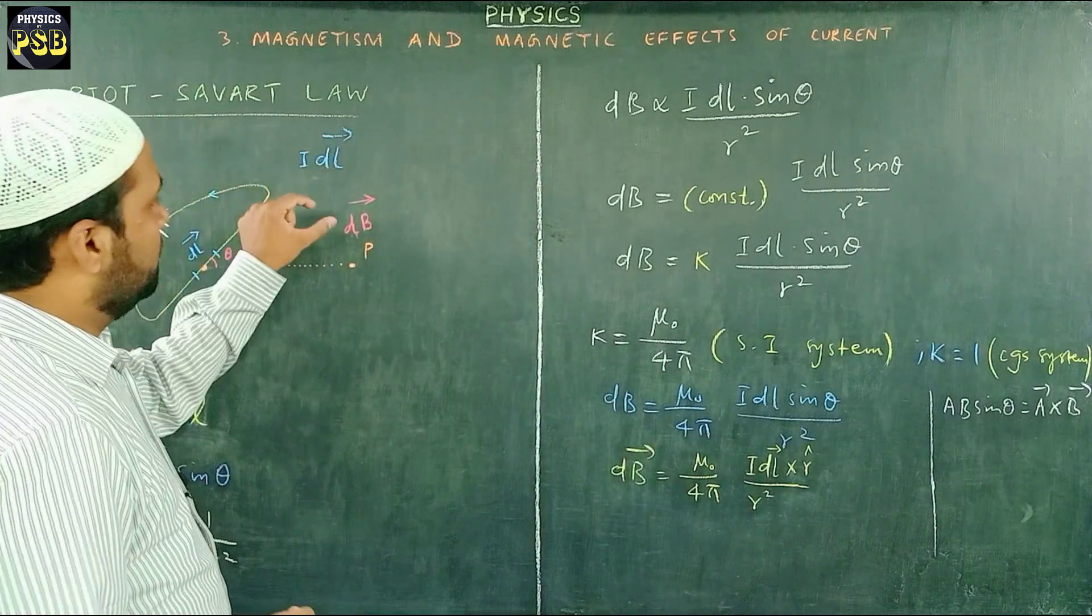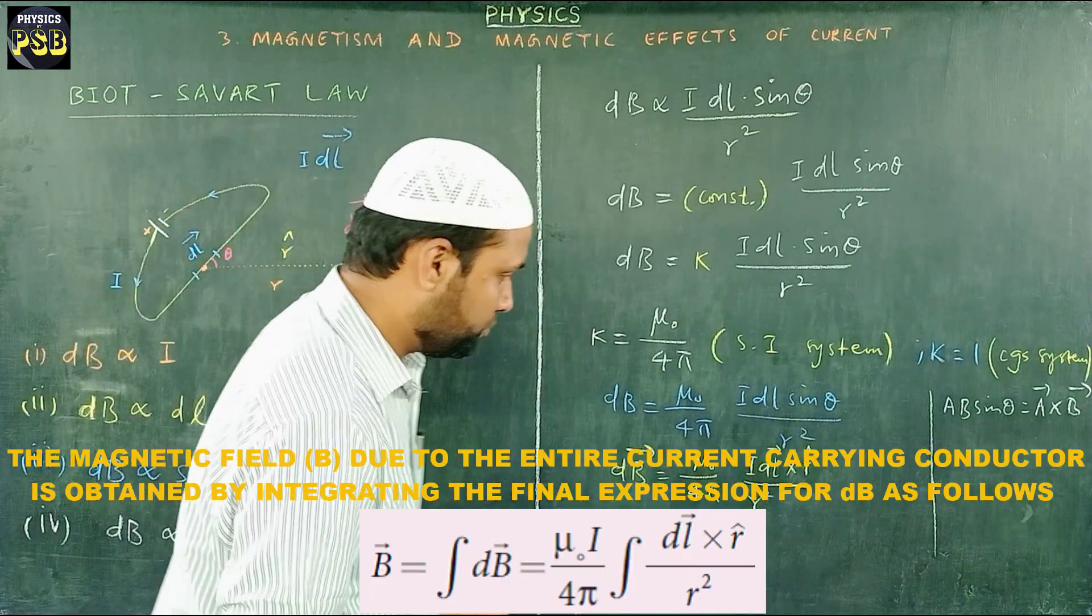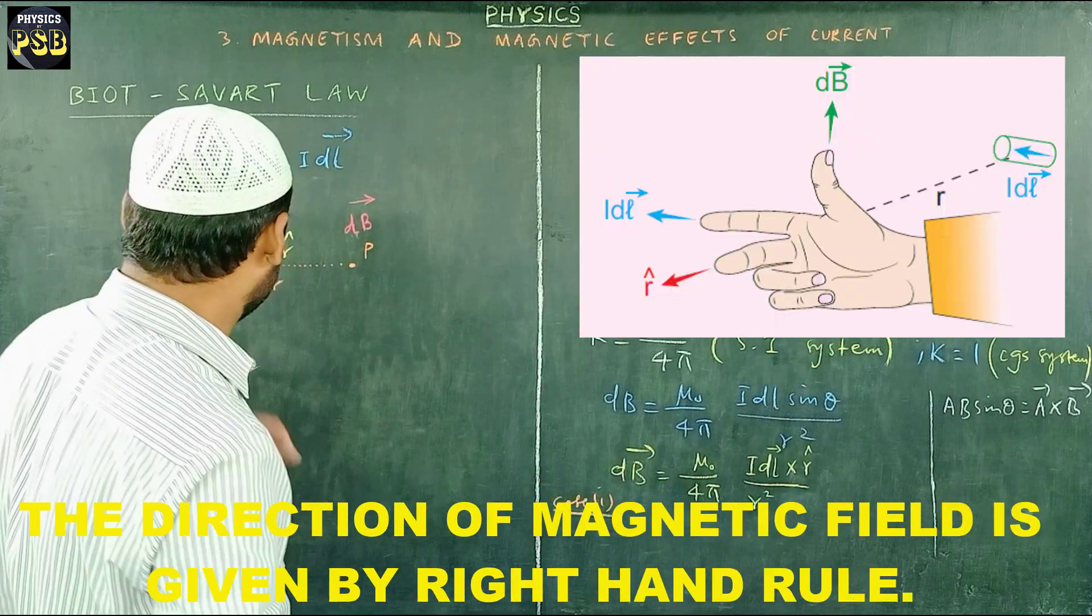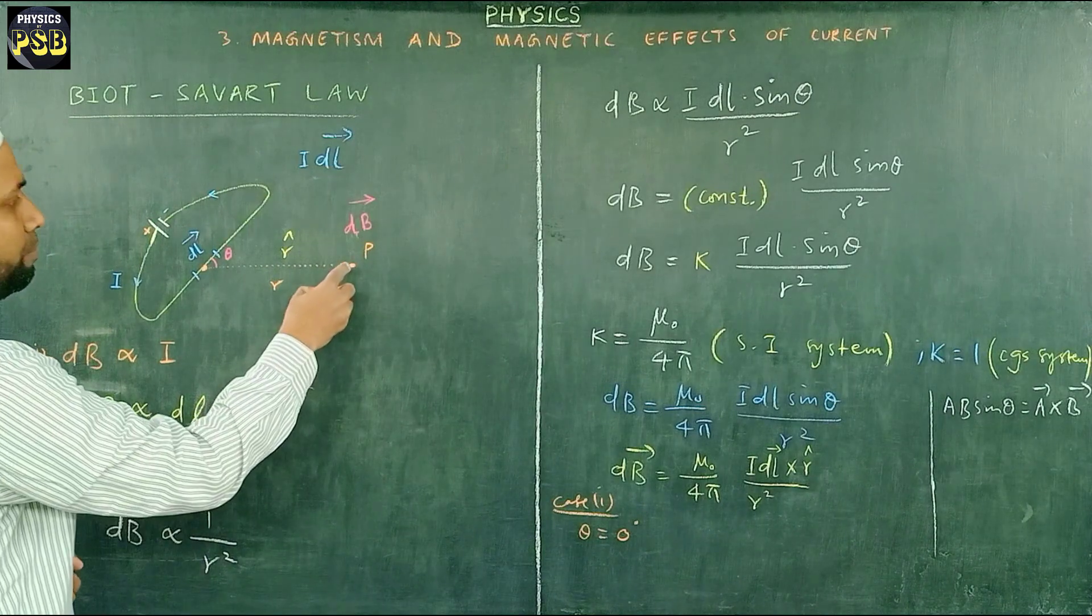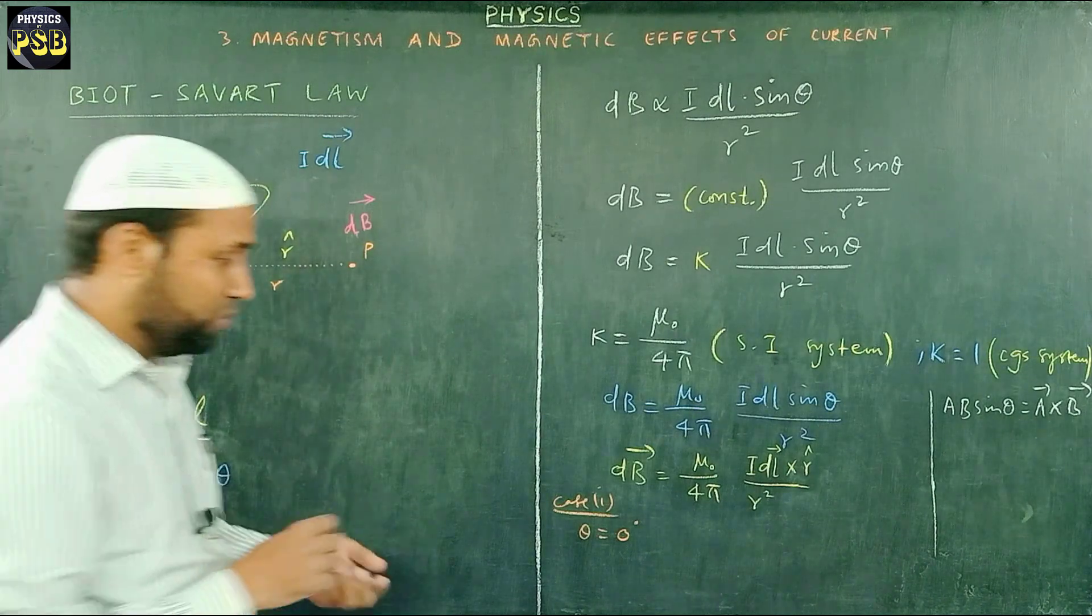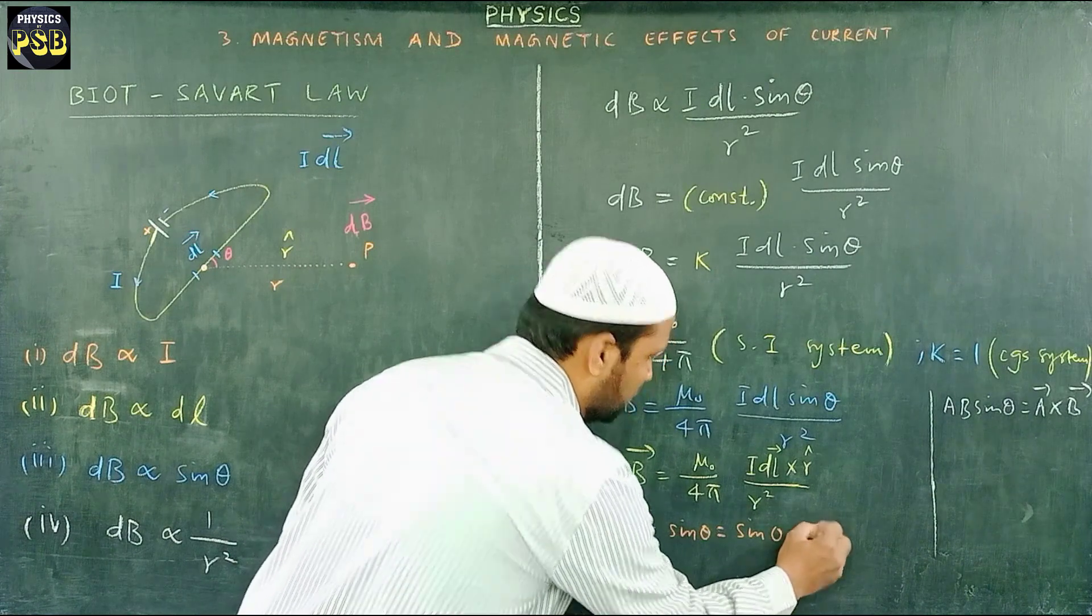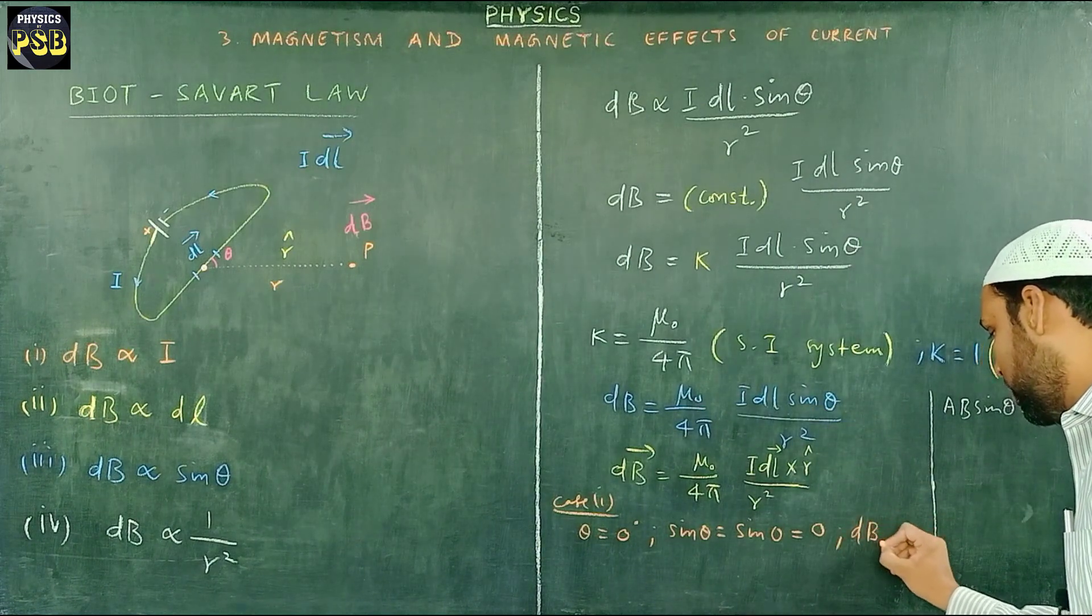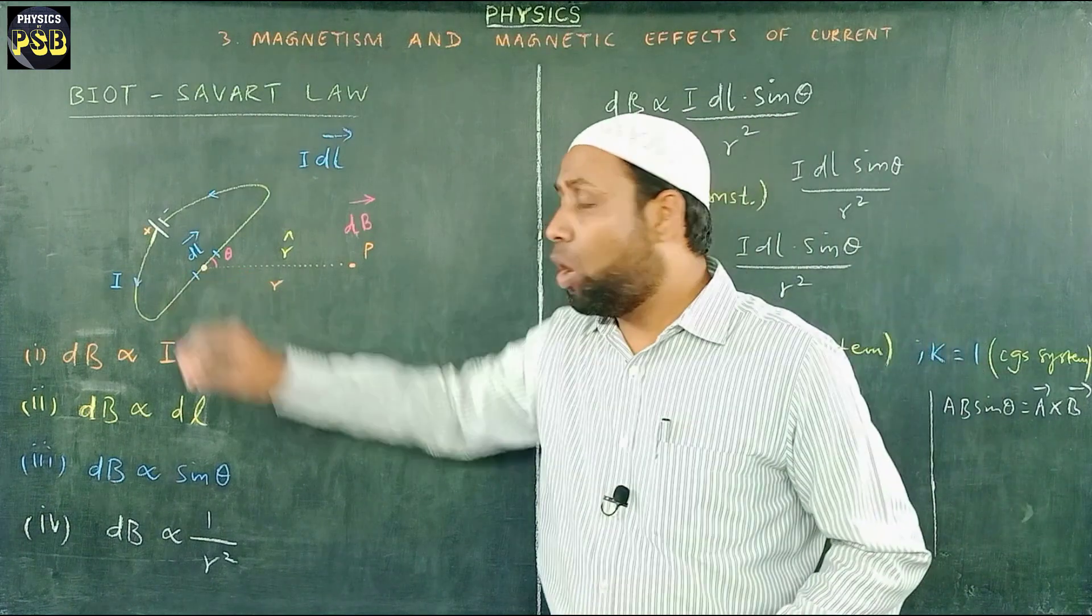Now we will discuss two special cases. Case one: suppose the angle theta is zero. Theta will be zero if we take a point P on the current element, then the angle becomes zero. If theta equals zero then sine of theta becomes sine of zero which is equal to zero. As a result if we substitute the value of sine theta into the expression we get dB becomes equal to zero. This shows that magnetic field becomes zero when we take a point on the current carrying element.